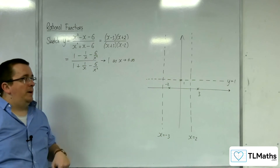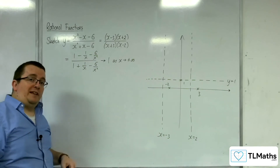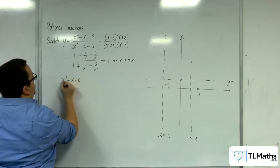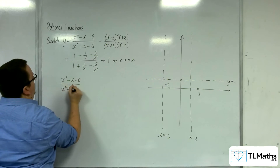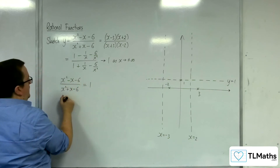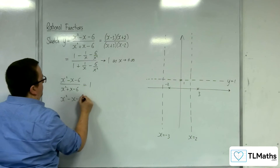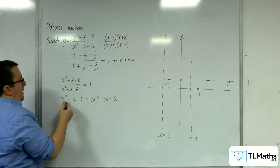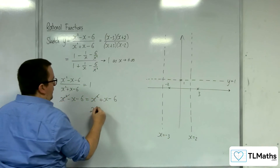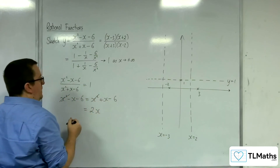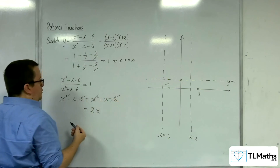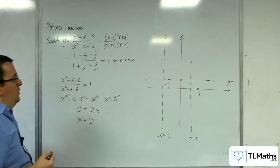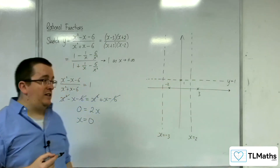Now, we need to determine whether it's going to cross that horizontal asymptote again. Setting (x² − x − 6)/(x² + x − 6) equal to 1 and multiplying up, the x squared terms cancel from both sides, and the minus 6 cancels from both sides as well, giving 0 equals 0, so x equals 0. That's the only point where it's going to be crossing the horizontal asymptote.